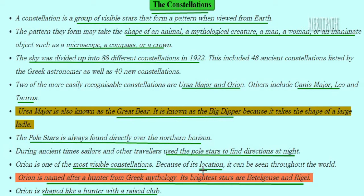The Pole Star is always found over the northern horizon. During ancient times, the Pole Star helped travelers to find directions because the Pole Star is the brightest shining star in the sky and is always located on the northern side. So the Pole Star used to help in finding directions.